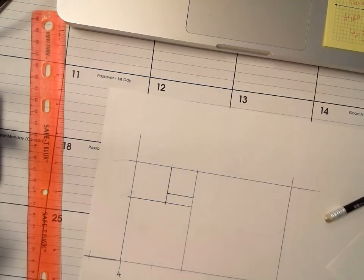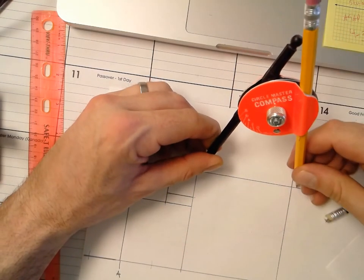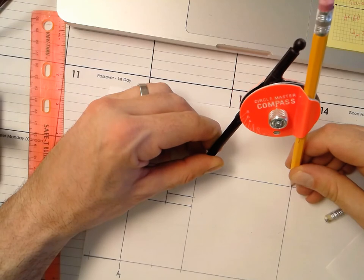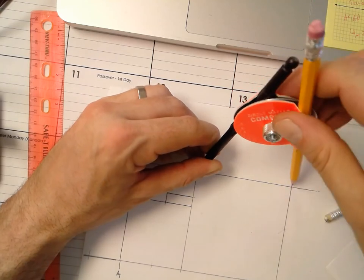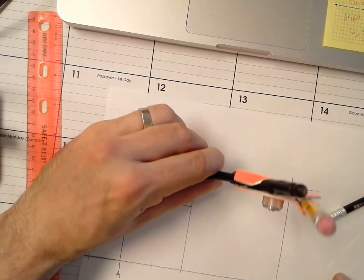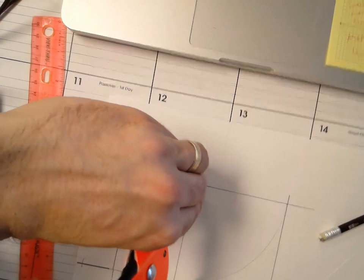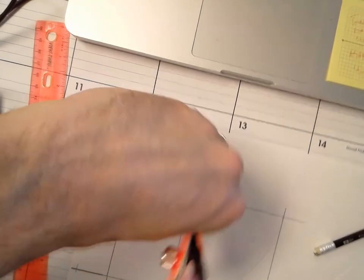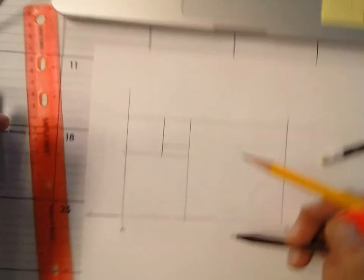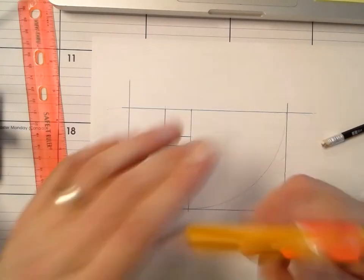The last thing that I'm going to do to make this really neat is using the compass set to this length, swing an arc from there to there. Oops, I think I moved my camera while swinging that arc.